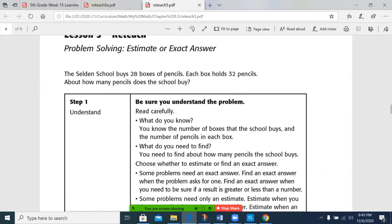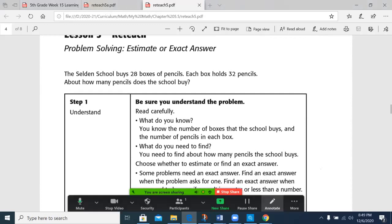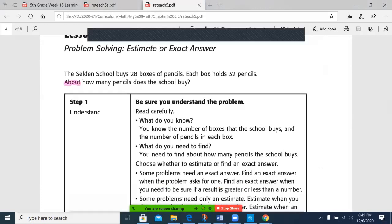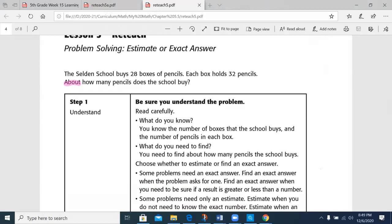So we have a sample problem here. The Selden school buys 28 boxes of pencils. Each box holds 32 pencils. About how many pencils does the school buy? This word right here, about, is a huge clue, and that is a clue that tells me that we don't need an exact answer. We can go ahead and estimate.